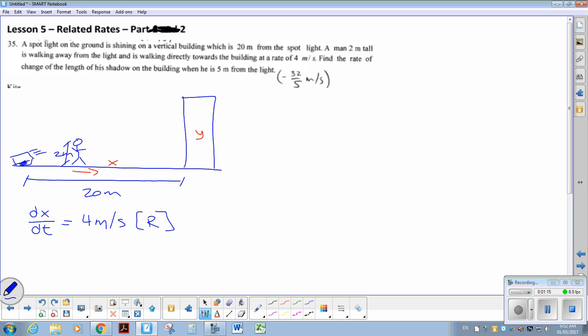Find the rate of change of the length of the shadow on the building when he's 5 meters from the light. So we're looking at when x equals 5 meters.